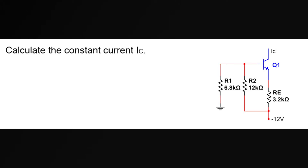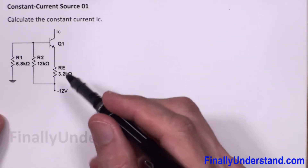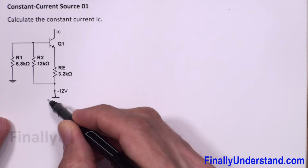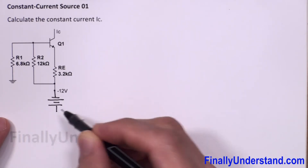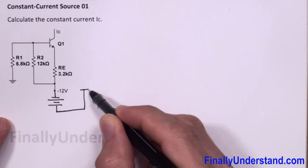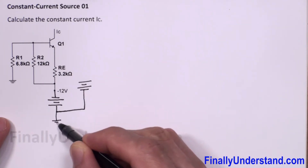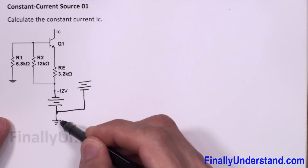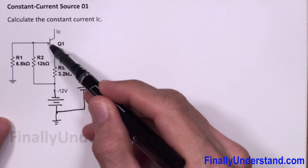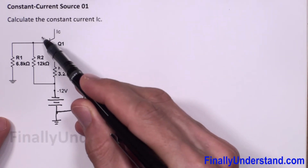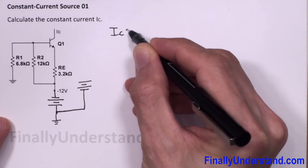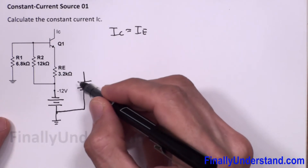Let's take a look at this example — we're supposed to find the value of current IC. In order to do so, I'm going to redraw the circuit. The negative terminal of VEE is connected to resistor RE, and VCC is connected to ground. To find the collector current, we recognize that base current IB is very small compared to IC and IE, so we'll ignore IB and assume IC is approximately equal to IE.